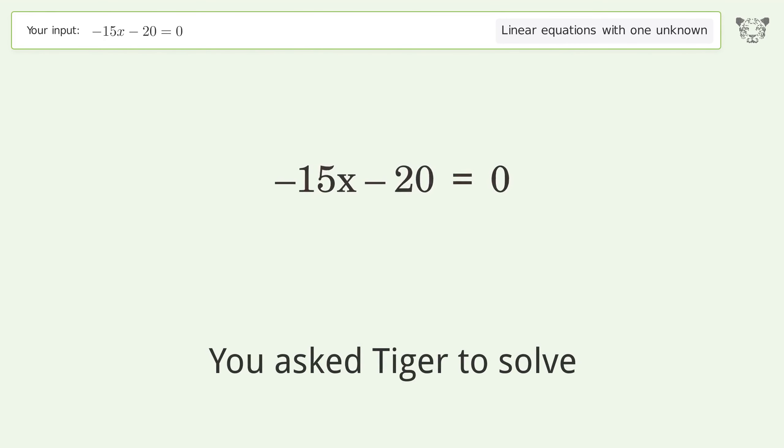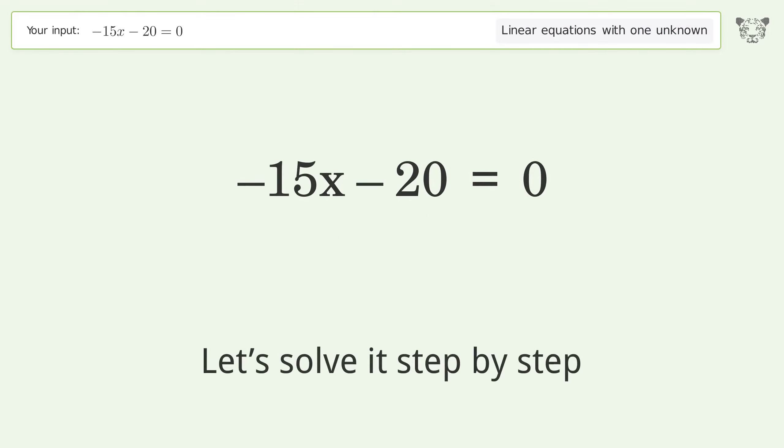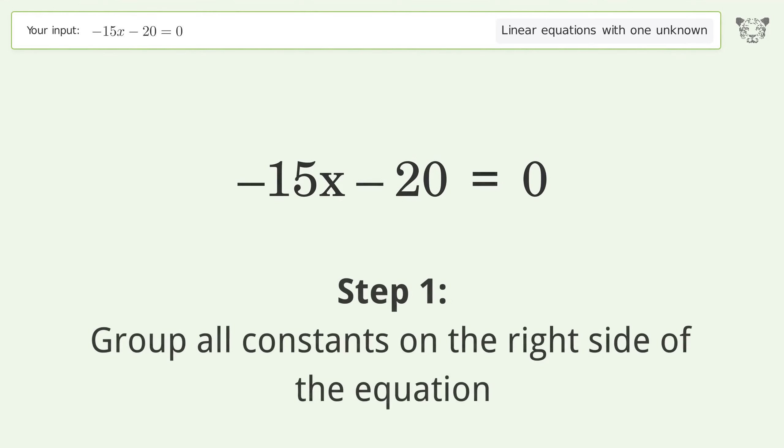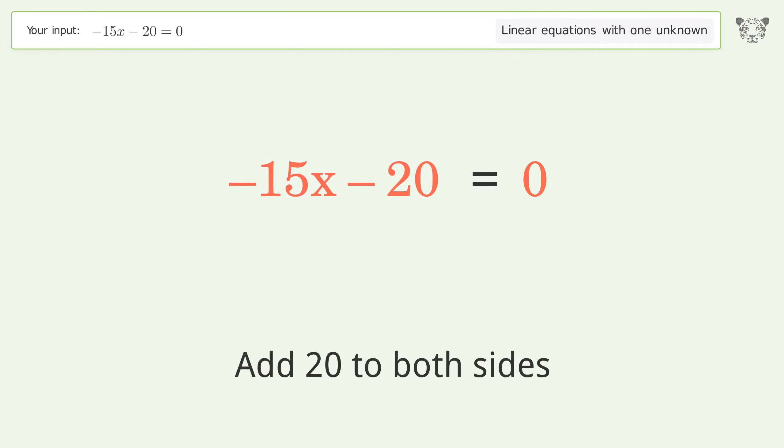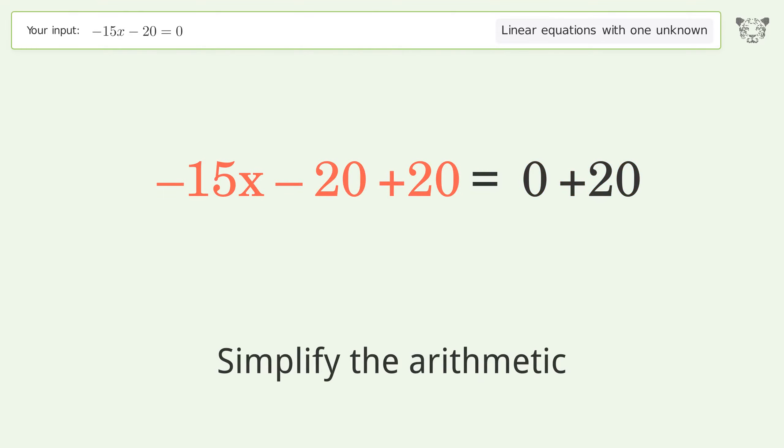You ask Tiger to solve this. It deals with linear equations with one unknown. The final result is x equals negative 4 over 3. Let's solve it step by step. Group all constants on the right side of the equation. Add 20 to both sides, simplify the arithmetic.